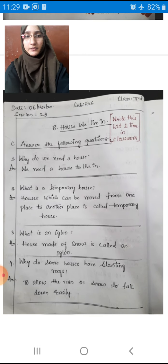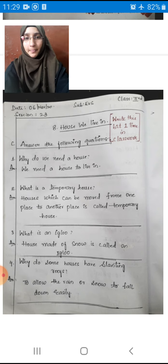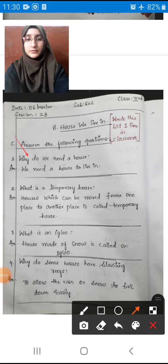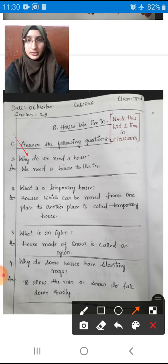These are your answers children, which you have to write one time in your classwork. See bit: Answer the following questions. First one is: Why do we need a house? We need a house to live in. It protects us from climate and conditions.